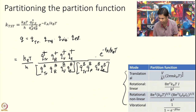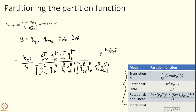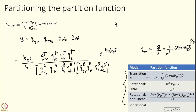Remember to divide by volume. The volume division is absorbed into the translational part: Q_trans/V = (1/h³)(2πmk_BT)^(3/2). So the volume is absorbed in the translational partition function. All Q's here are the full partition function divided by volume.